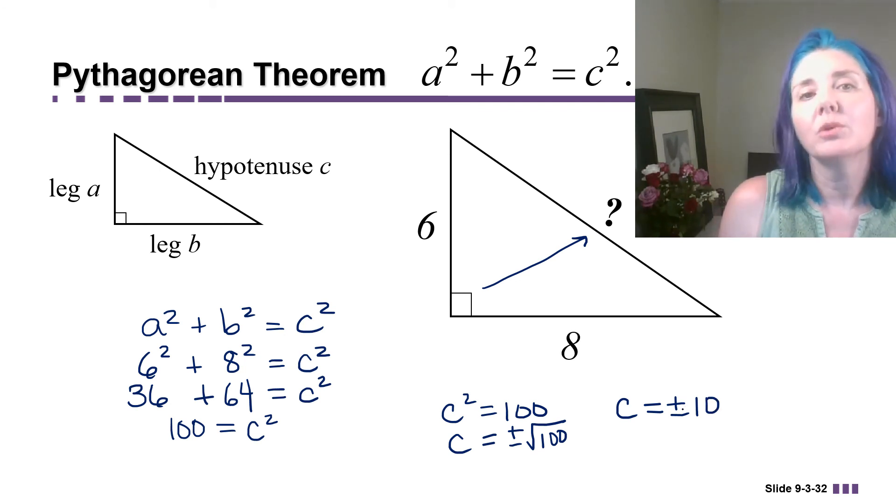But again, we're working with the length of a side of an object. You can't have a negative length, so you just use c equals 10.